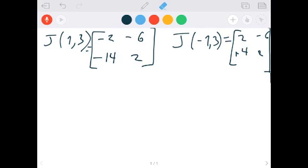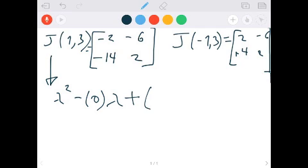So the first one, let's find the eigenvalues of the matrix corresponding to 1, 3. So you would just get lambda squared minus the trace of the matrix, which is just the diagonals added together. So minus 2 plus 2, that's 0, times lambda. And then, plus the determinant of the matrix, which is minus 4 minus 6 times 14, and that equals 0. So that's your characteristic equation.